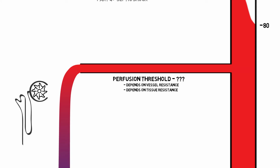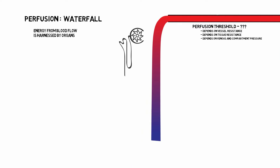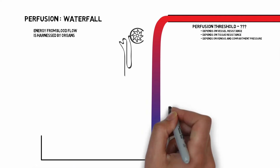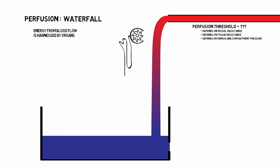Among the frequently forgotten is venous and compartment pressures, the pressures downstream of this waterfall. The height of any waterfall, after all, is measured from its ledge to its base. Any increase in the venous or compartment pressures raises the level of the base and therefore decreases the height of the waterfall.